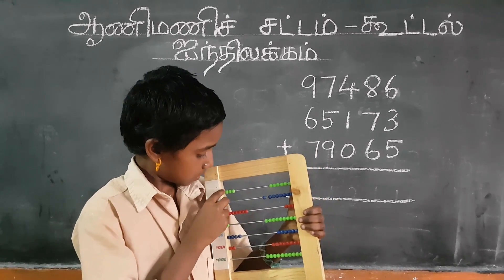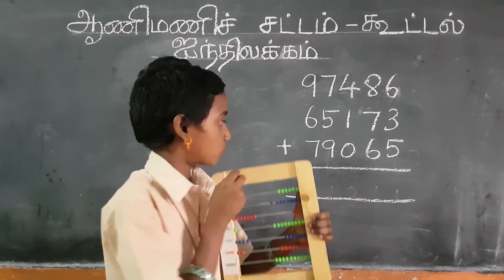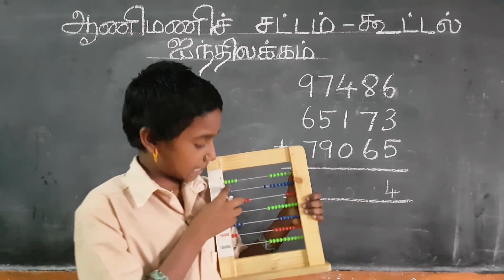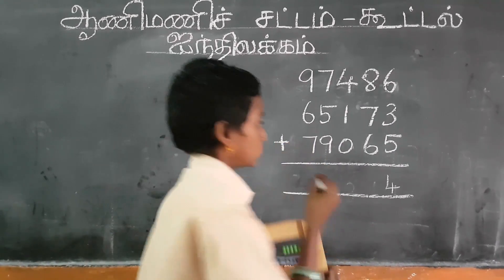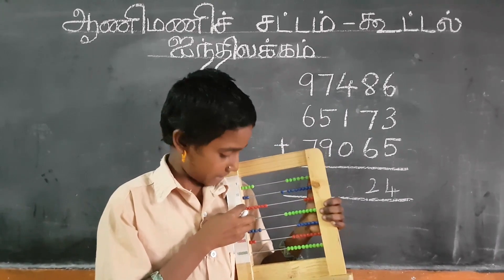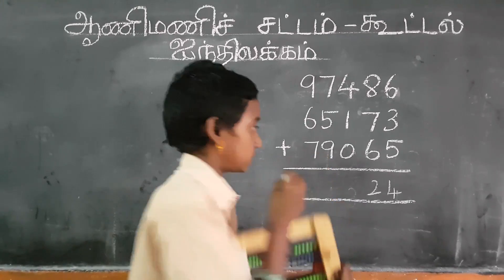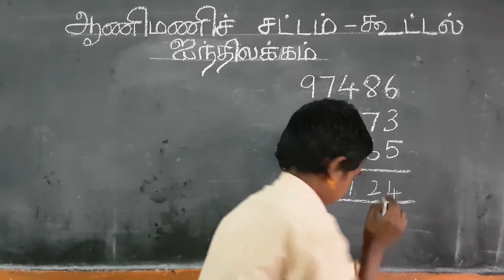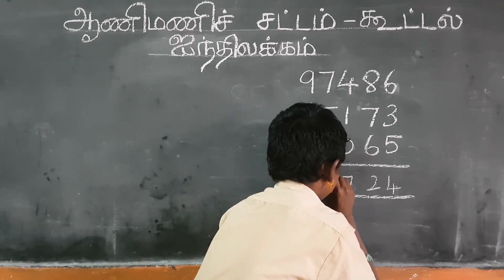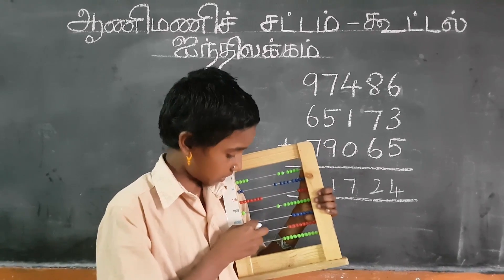Answer is 1 place left 4. 1, 2, 3, 4. 10 place left 2. 1, 2. 100 place left 7. 1, 2, 3, 4, 5, 6, 7. 1. 10,000 place left 4. 1, 2, 3, 4.